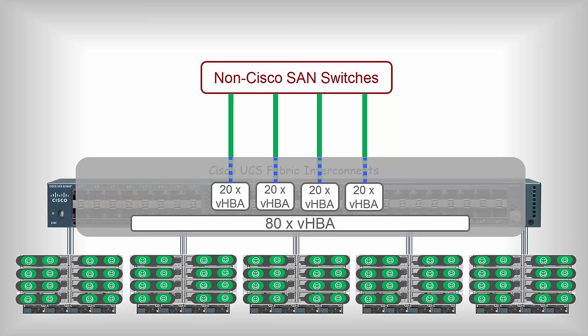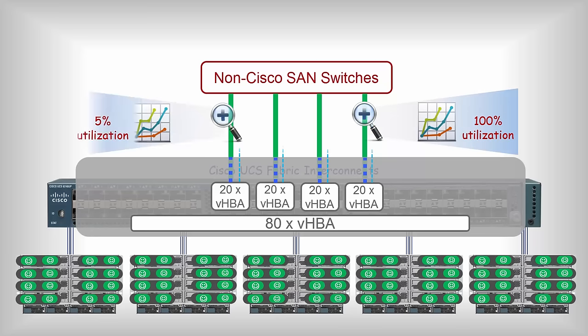Note that the auto pinning occurs in a true round-robin fashion — it does not account for the traffic load from vHBAs. It is very much possible that a few of the VMs are running some heavyweight application and pushing the link utilization to maximum, while the rest of the VMs are hardly pumping any traffic. This results in uneven link utilization. You have the option of manual pinning on Cisco UCS, but in large environments, that is an extremely complex traffic uplink engineering mechanism.